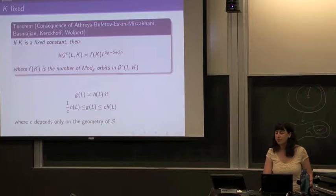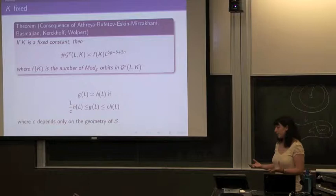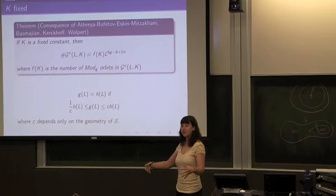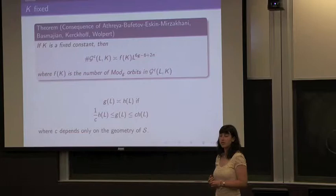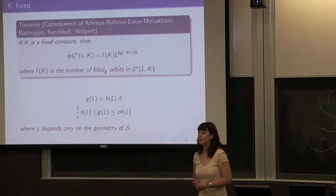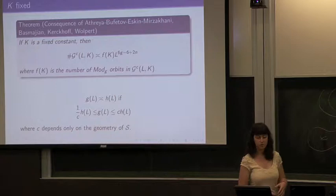f(K) doesn't depend on L because you're looking at the topological type of these 4-valent graphs on a surface — it's a topological function, there's no length there. There are only so many ways of embedding a valence-4 graph of K vertices onto the surface.